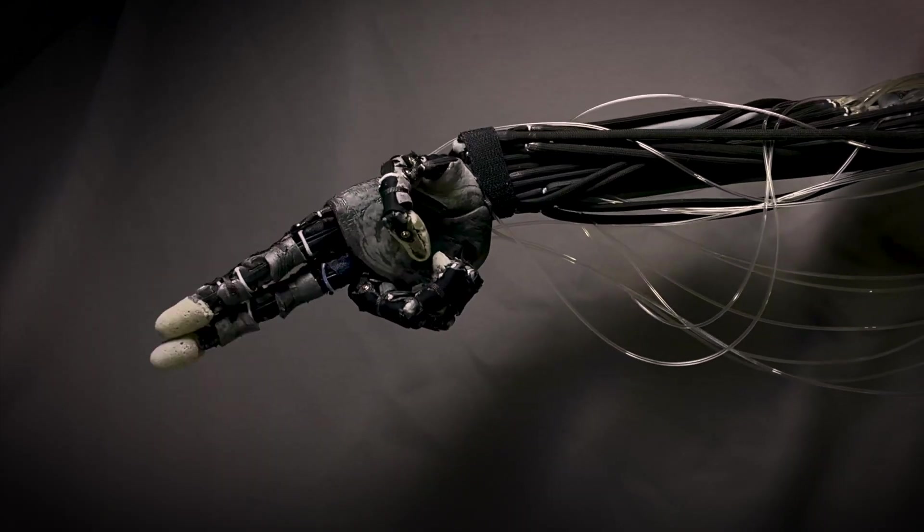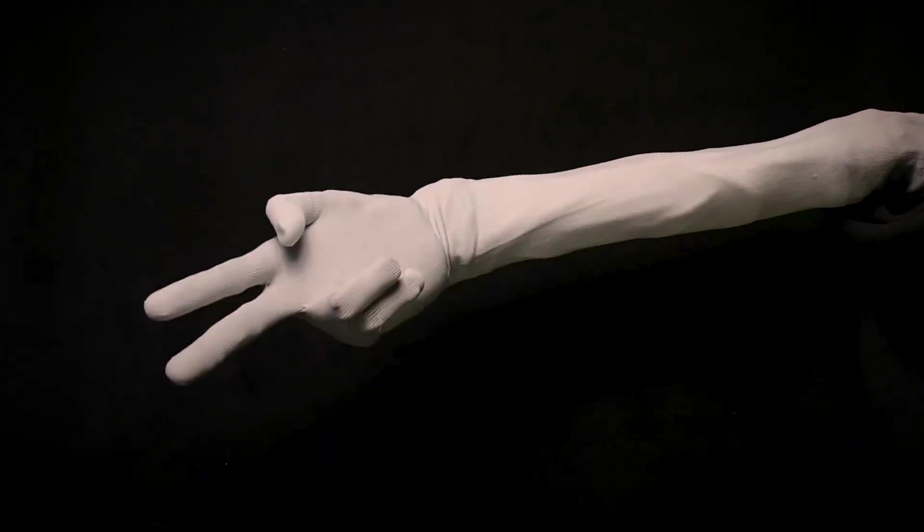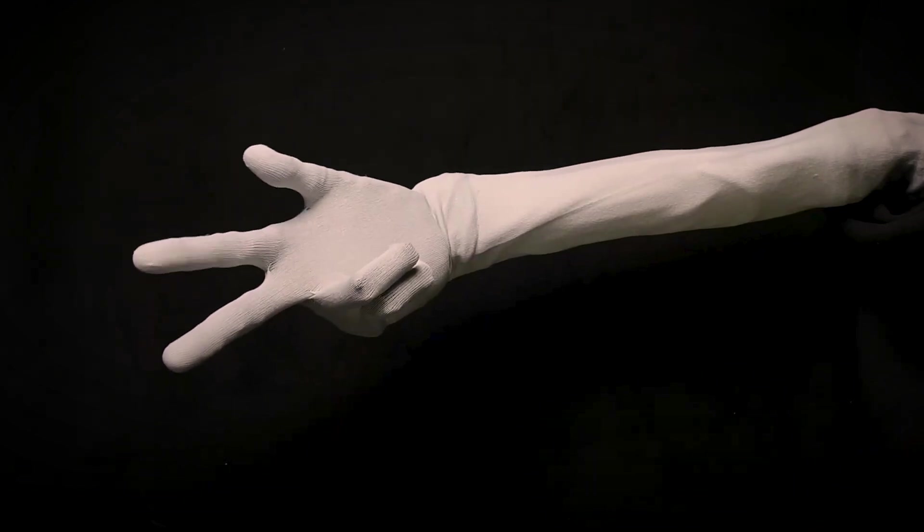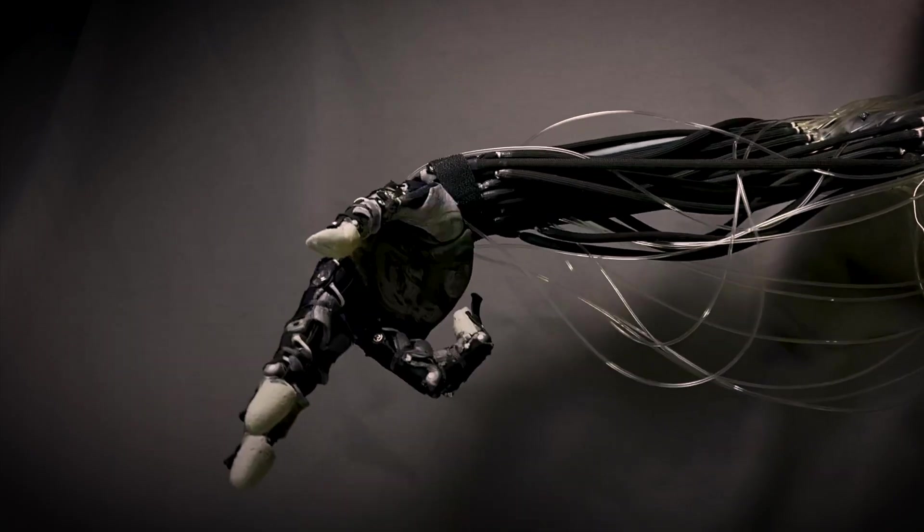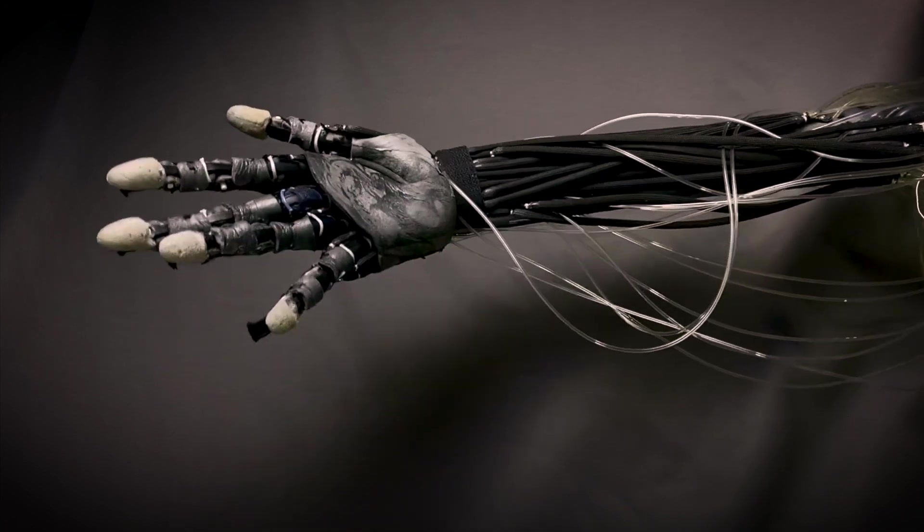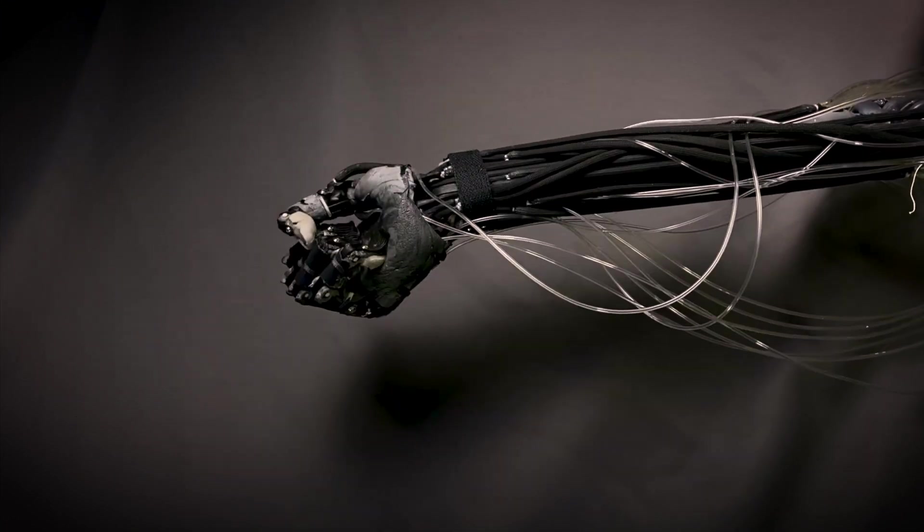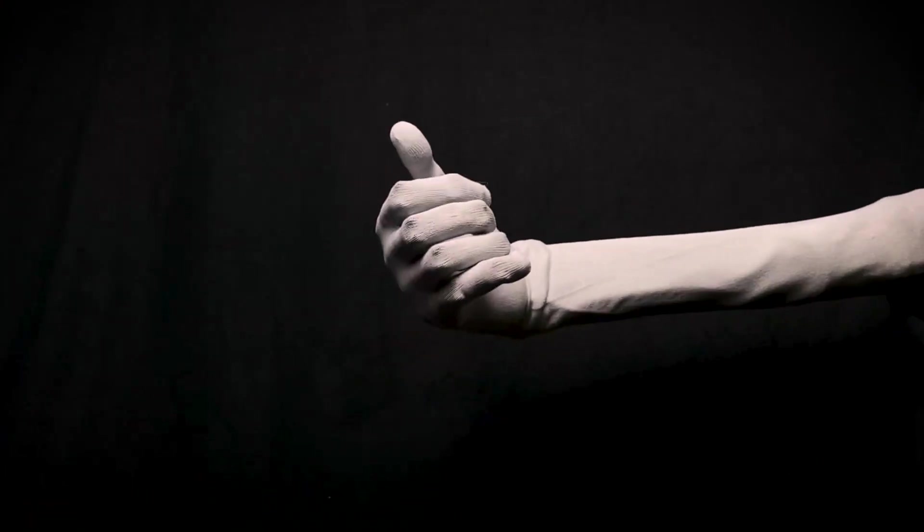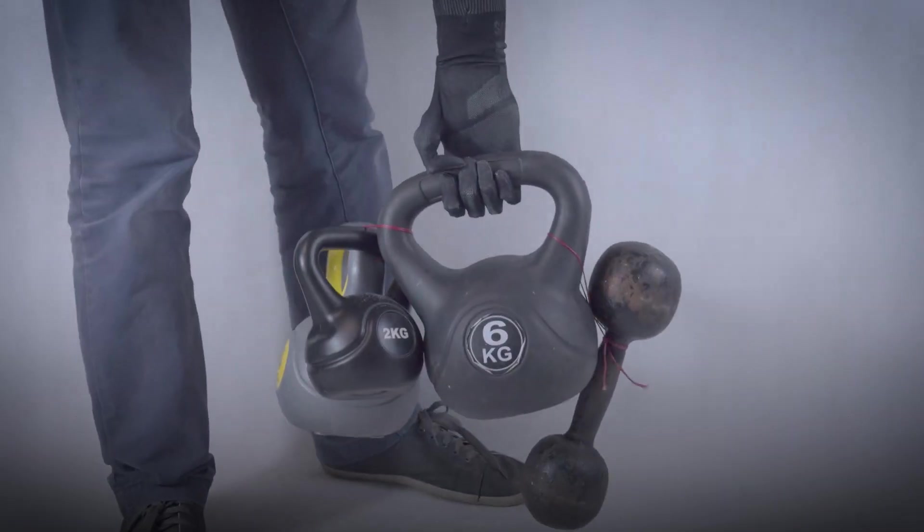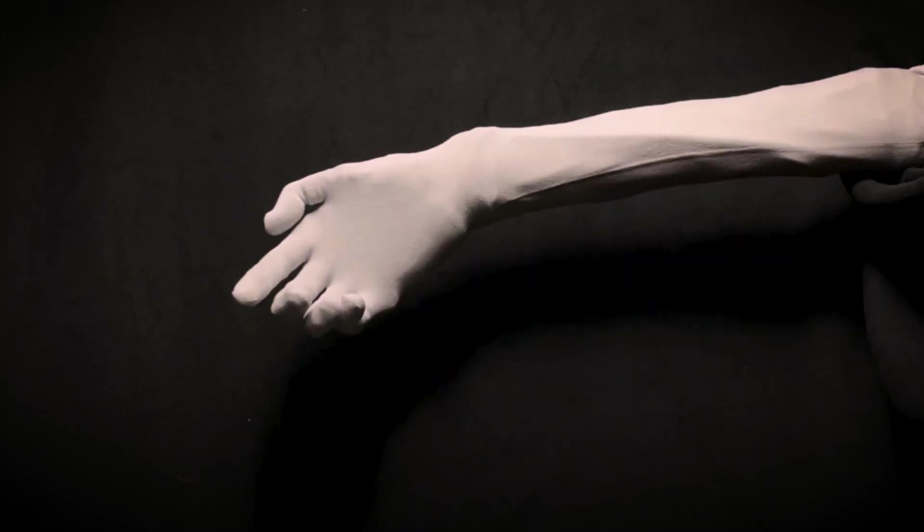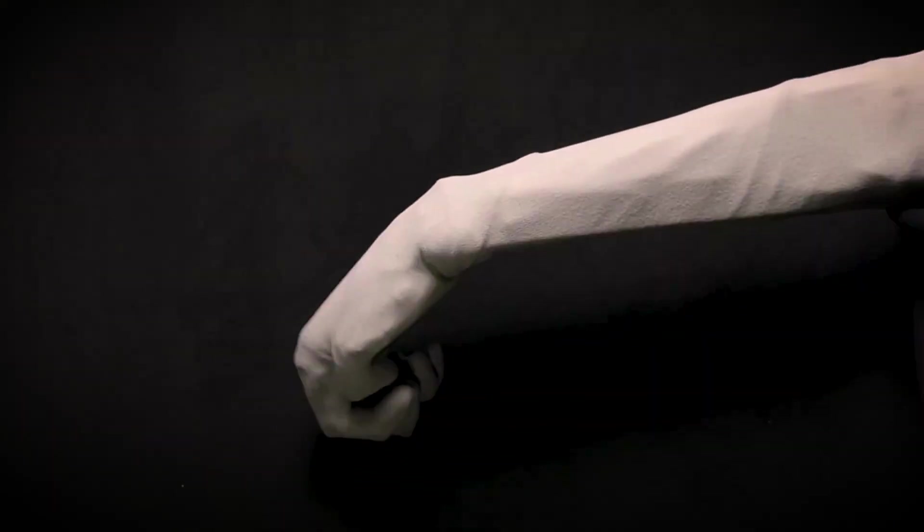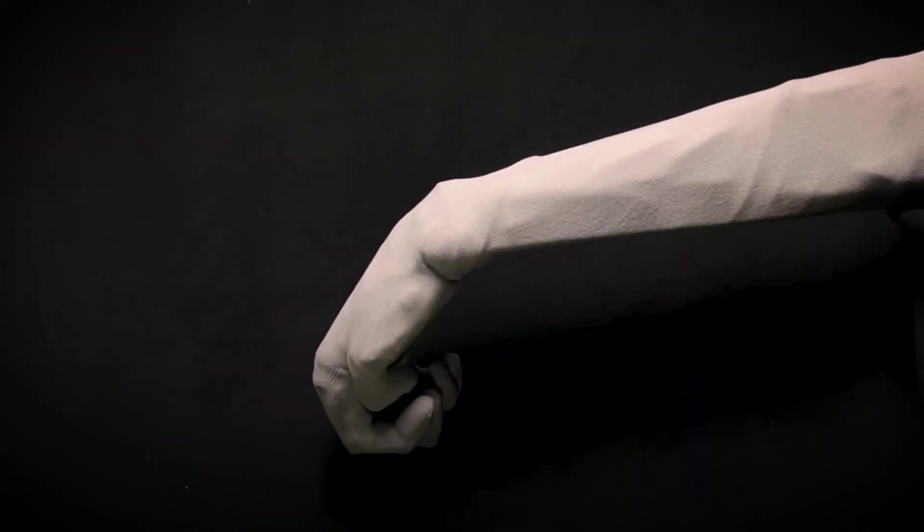They contract, relax, and even twitch with lifelike precision, giving Clone Alpha the kind of smooth, organic movement you'd expect from a trained athlete, or at least someone who goes to the gym more than twice a year. These myofibers can contract by 25% of their length, roughly the same as human muscle, and they can lift 500 times their own weight. That means if one of these fibers was the size of a bicep, it could probably curl your fridge.